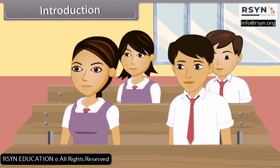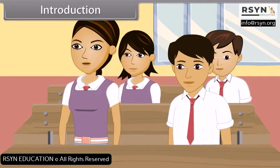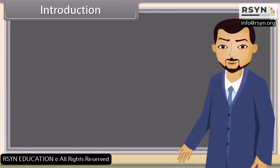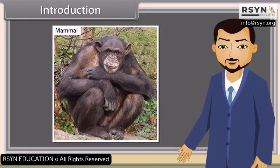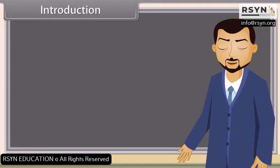Good morning teacher, good morning students. Today we will learn organisms and their population. Organisms are the living things that are capable of reacting to stimuli, reproduction, growth and homeostasis. Examples of organisms are mammals, birds, bacteria, fungi, etc. We know that the population of organisms has certain characteristics, and on the basis of their characteristics we define the population of organisms.